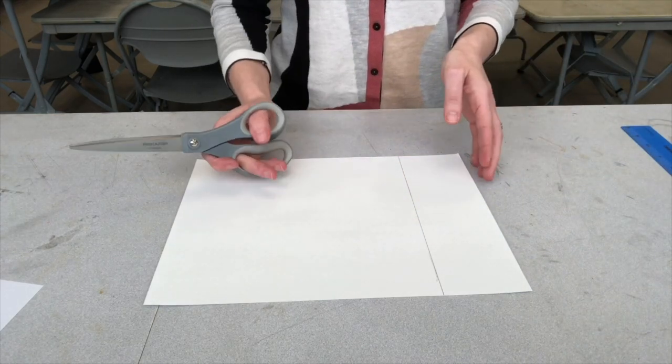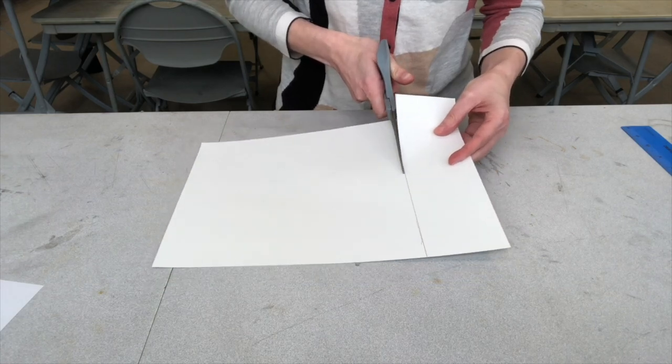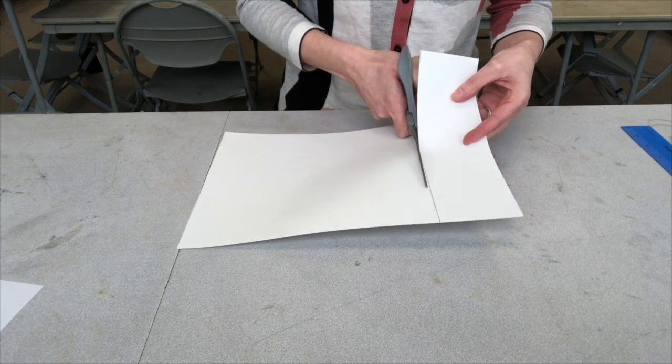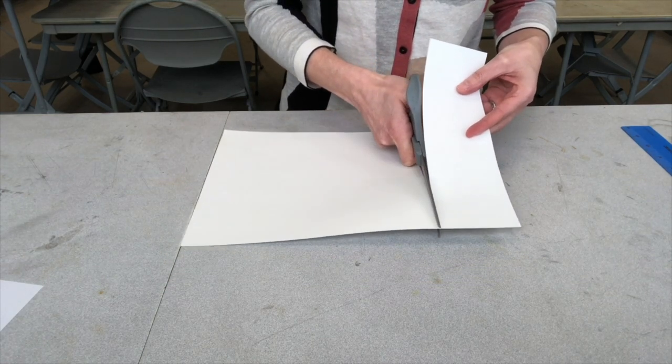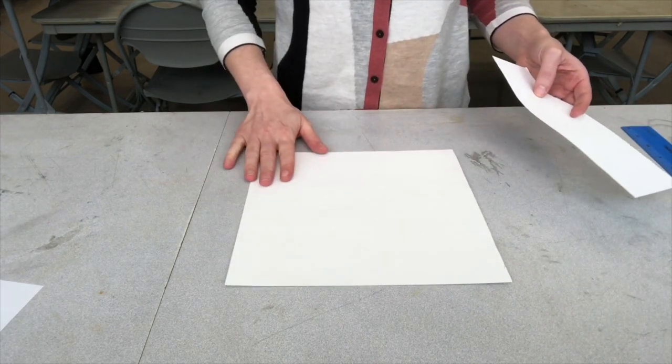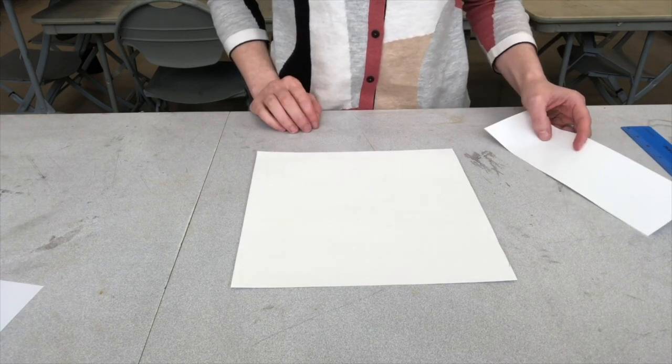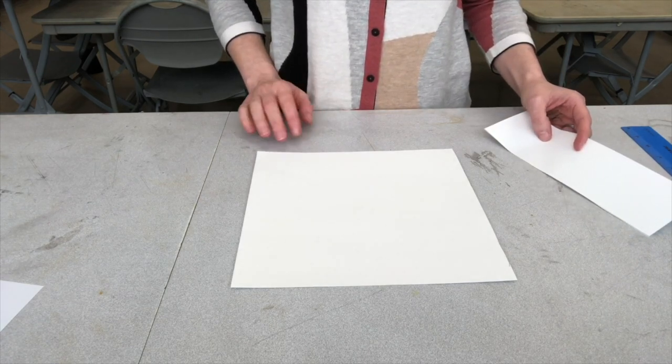So with a pair of scissors, I'm going to cut off the extra bit of paper. So my work surface is now a nine inch square. Yours can be any size, but it works out easier if you start with a square.